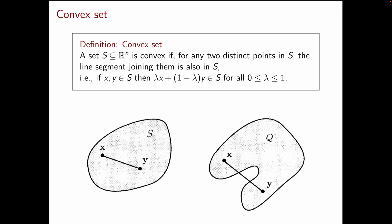How do we write algebraically the fact that the line segment joining two points is in the set? We construct the point lambda X plus 1 minus lambda Y for any lambda between 0 and 1. This gives you precisely all the points in the line segment joining X and Y. For example, for lambda equal to 1, this is precisely the point X. For lambda equal to 0, this is precisely the point Y. And for lambda equal to 1/2, this is the midpoint between X and Y.